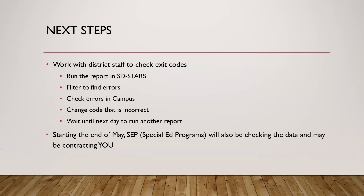Your next steps are to work with your district staff to check those exit codes. Run the report in SD Stars and filter to find errors — or hopefully there are no errors. Change any incorrect codes in Infinite Campus, not in the spreadsheet, since changing the spreadsheet won't help. Then wait until at least the next day to run another report, because SD Stars uploads overnight — it pulls information from Infinite Campus every evening. Starting at the end of May, the special ed programs office will also be checking the data and may contact you if errors are found, but please don't wait — start making changes now or as soon as school is out.